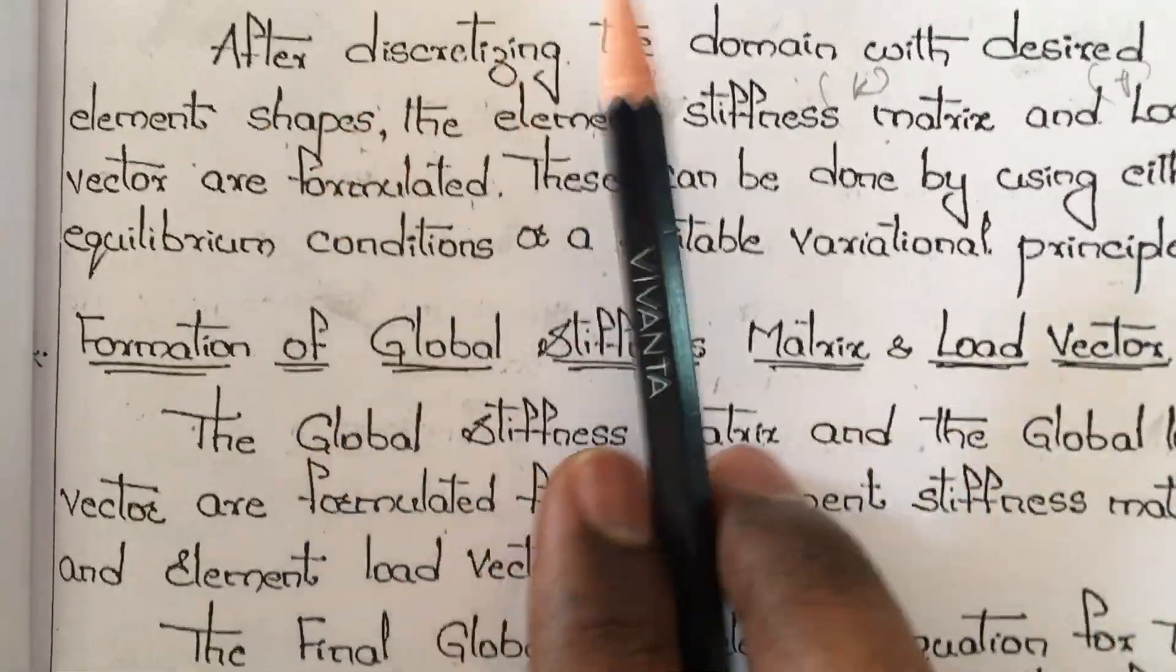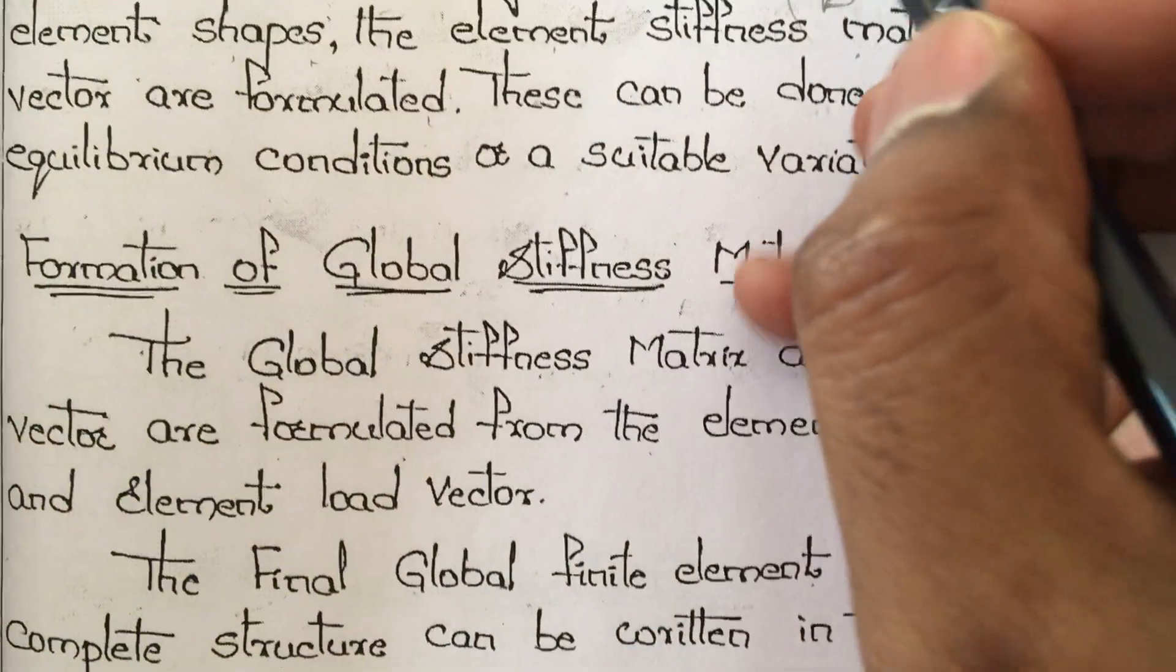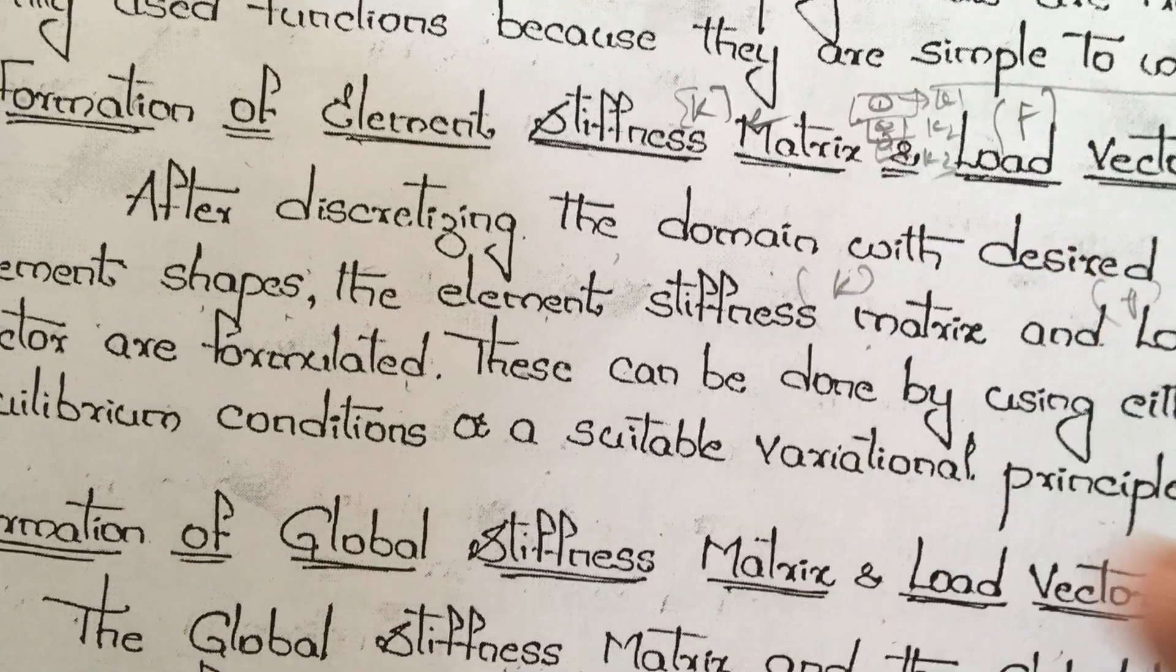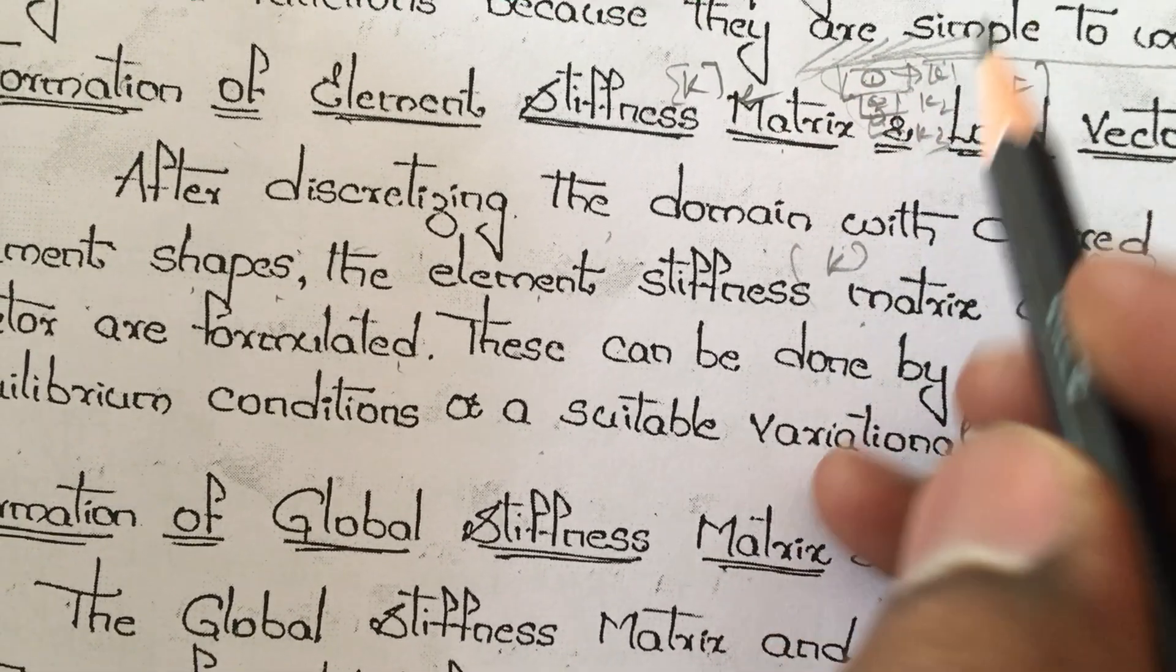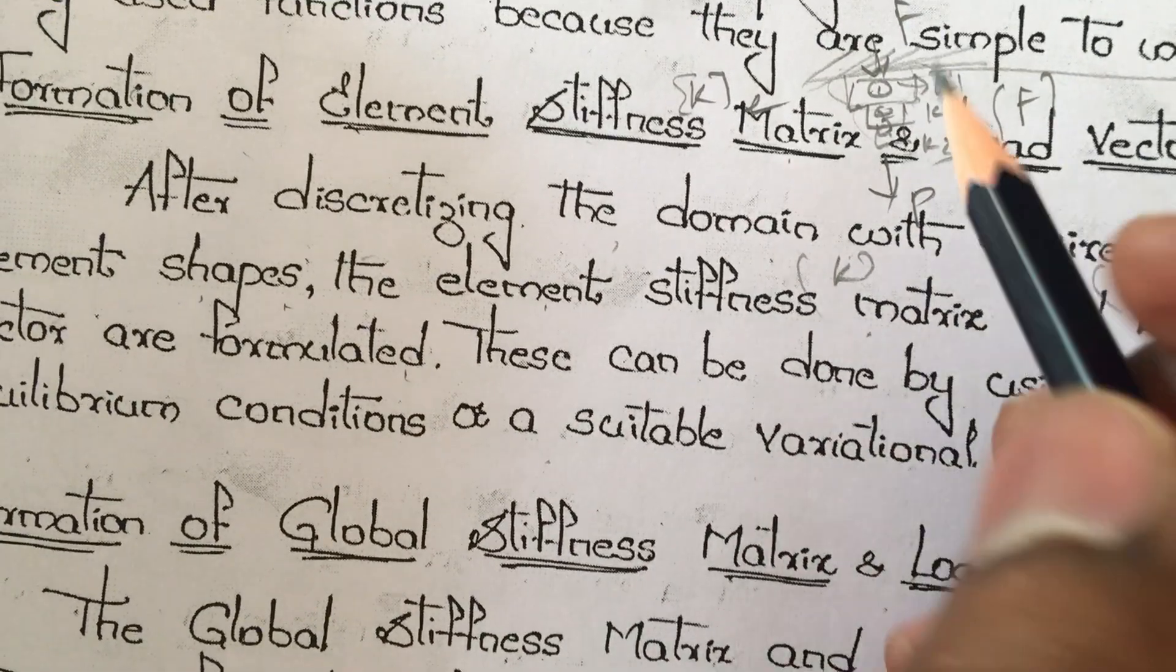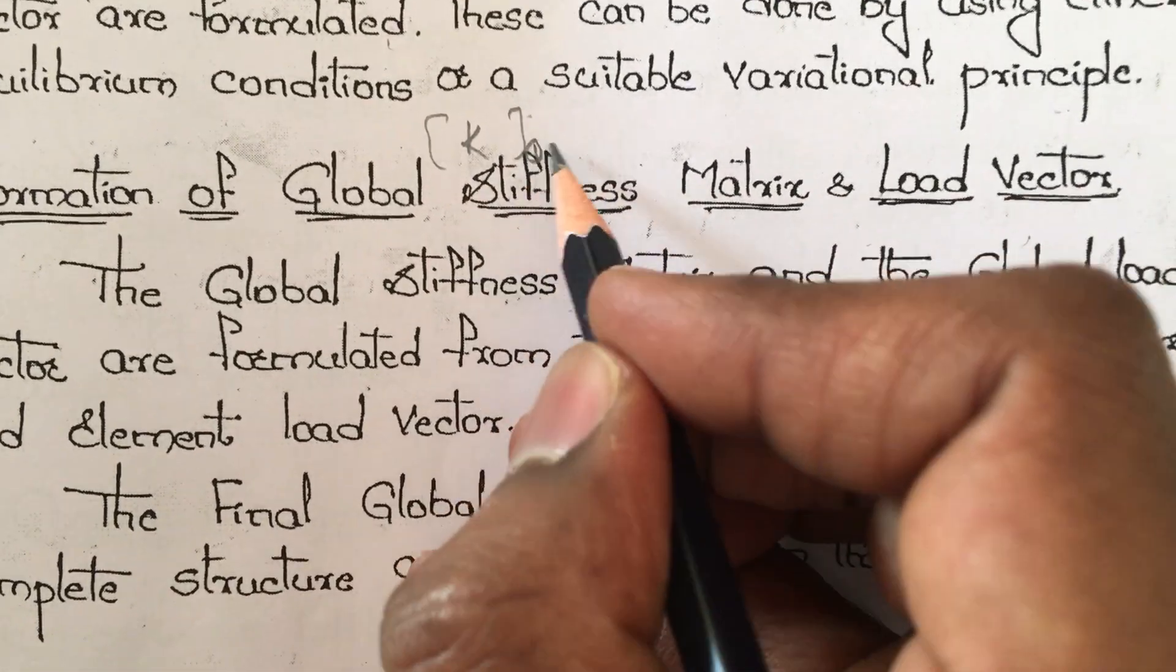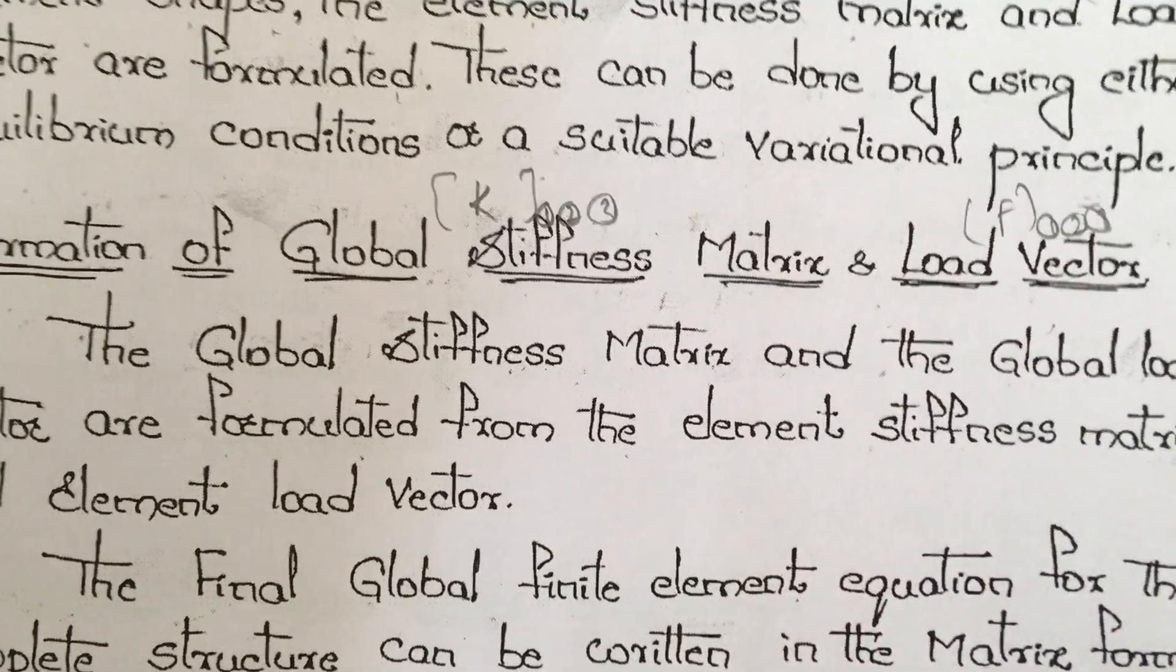Next is formation of global stiffness matrix and load vector. In the diagram, there are three elements. Each element has stiffness k1, k2, k3. Each box has its own stiffness. Each element has load applied - f load. After getting elemental stiffness and load vector, we do formation of global stiffness and load vector for the complete structure with elements one, two, three.